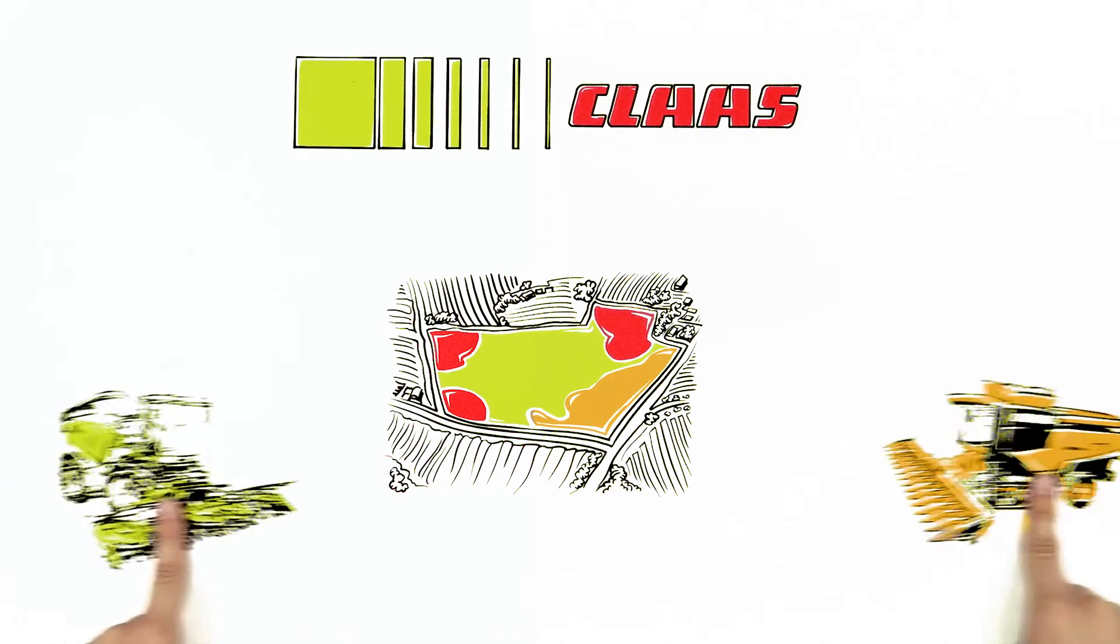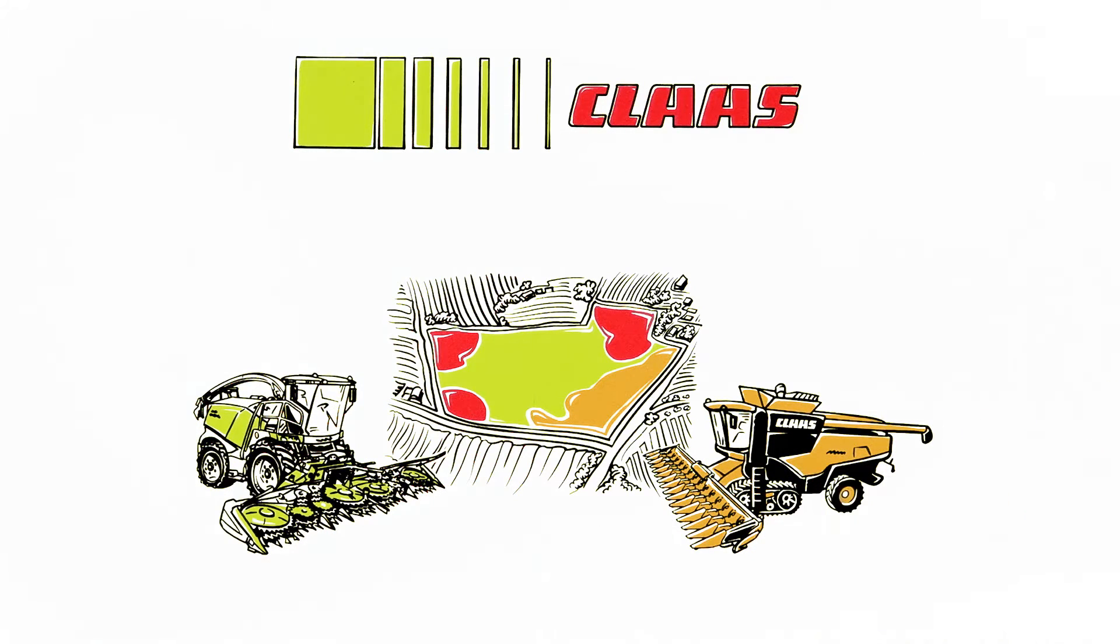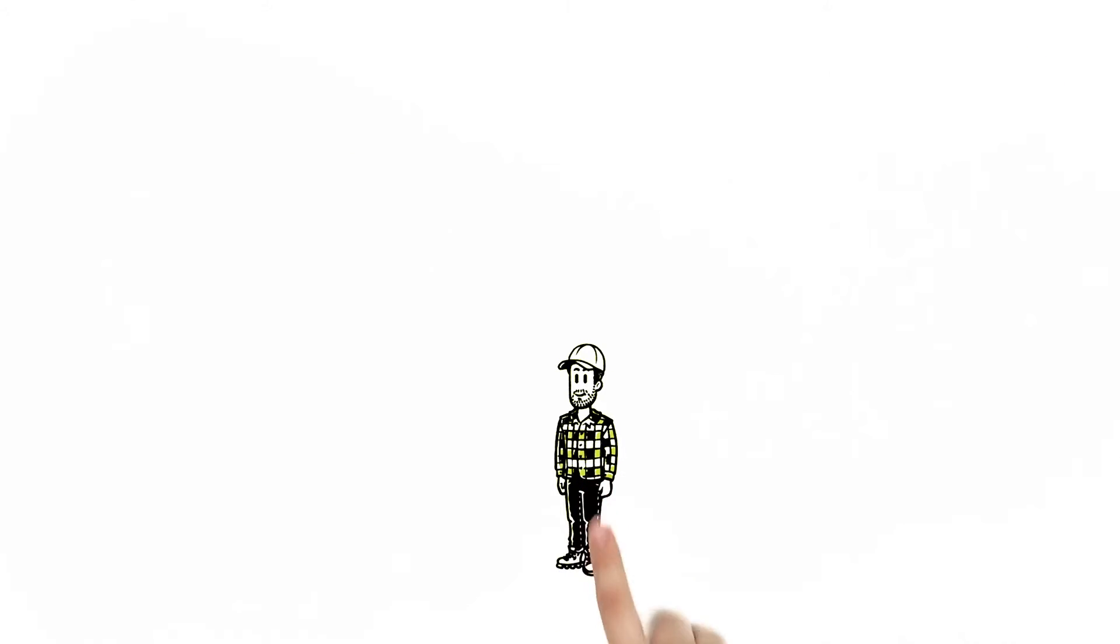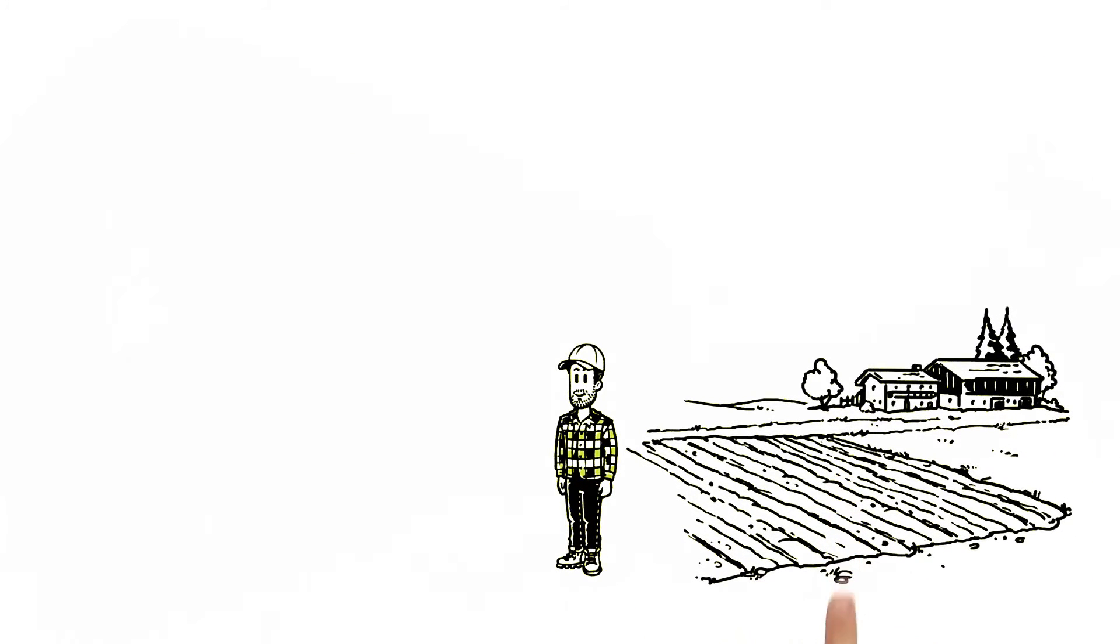We explain variable rate harvesting. This is Luke, a progressive row crop farmer who uses variable rate technologies to optimize his planting, application, and irrigation practices and to better manage every zone in his fields.